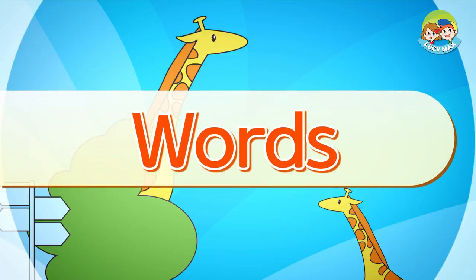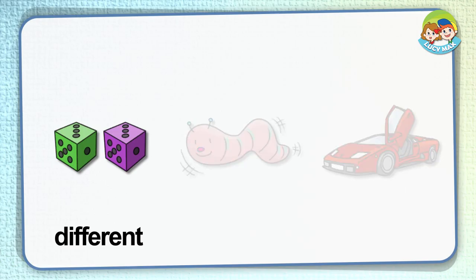First, we'll learn some words using pictures. Different: if two things are different, they are not the same. In the picture, the dice are the same size, but their color is different. One is green and the other is purple.